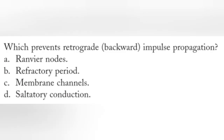The next question is: which prevents retrograde impulse propagation? Option A, Ranvier nodes. Option B, refractory period. Option C, membrane channel. Option D, saltatory conduction.